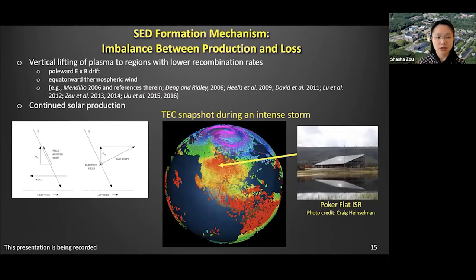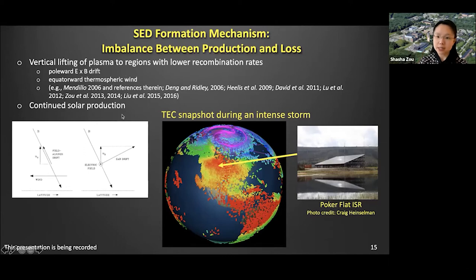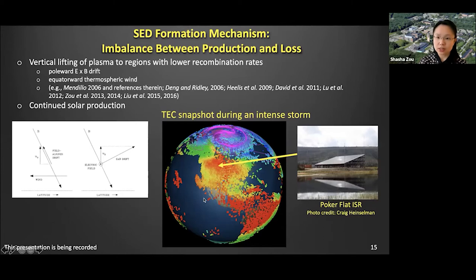Combining the drift and the chemical reactions together, we look at the SED formation mechanism: the imbalance between production and loss. On the dayside in sunlit regions, solar production is constantly creating fresh plasma. At the same time, if we lift the plasma away from the neutrals, we can increase its lifetime and reduce loss, thereby increasing the total electron content. The key question is where and under what conditions the lifting force is a major contributor. To find that, we need to measure the perpendicular drift and the field-aligned drift, which we do by combining large-scale TEC maps with localized measurements from the Poker Flat incoherent scatter radar.